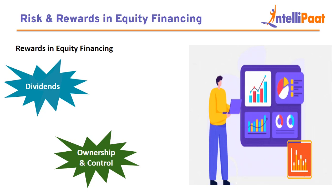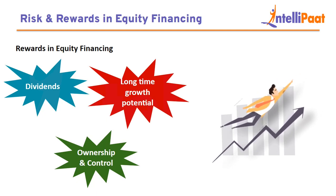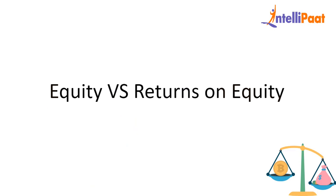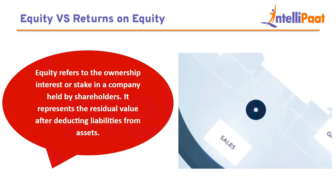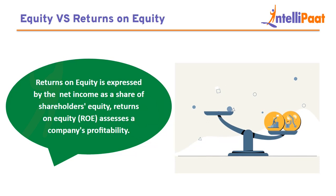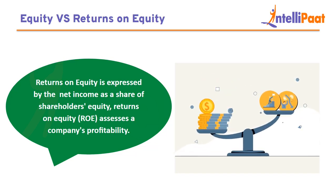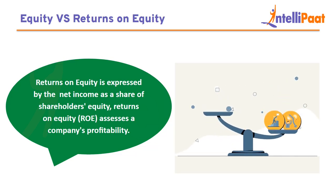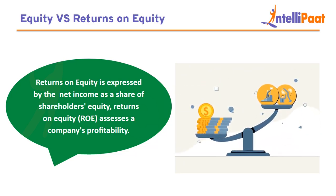Ownership and control: equity investors receive a piece of the company's ownership, along with benefits including the ability to vote and select the board of directors. Long-term growth potential: equity investments have historically offered the promise of high long-term returns compared to other asset types like bonds and cash. Returns vs. equity: equity refers to the ownership position in a firm that represents the value of investment made by shareholders. Return on equity (ROE) is a measure of the company's ability to generate profit from equity. ROE is calculated by dividing net income by shareholder equity, serving as a yardstick for evaluating how well the company converts equity into profit.